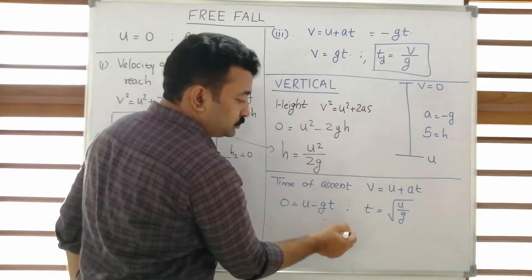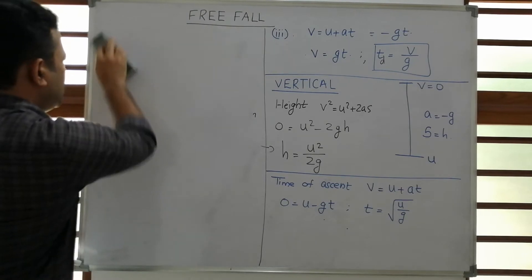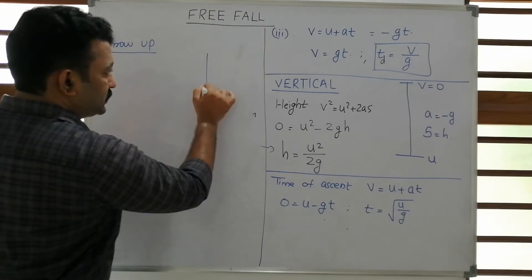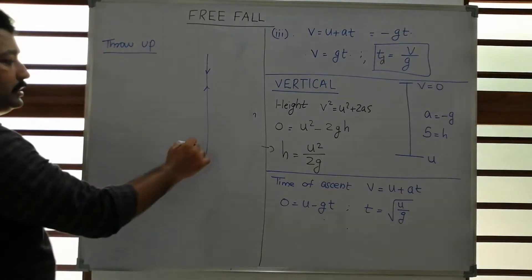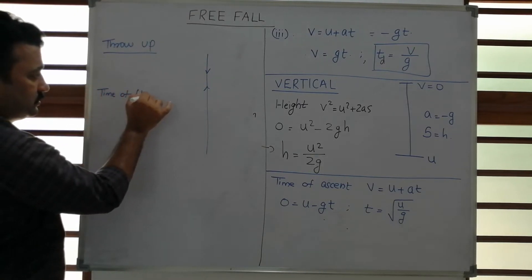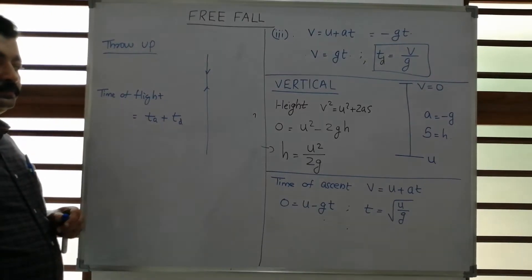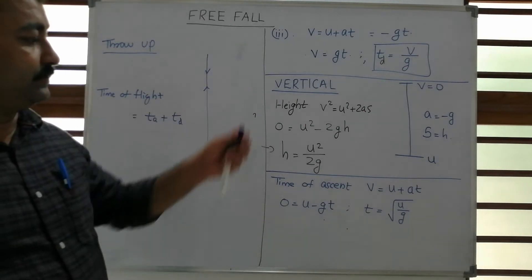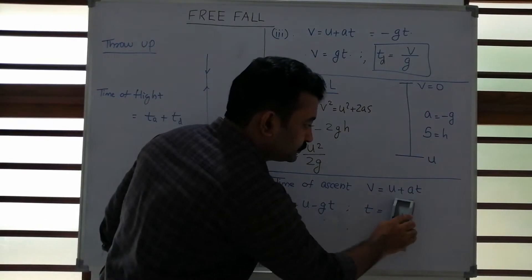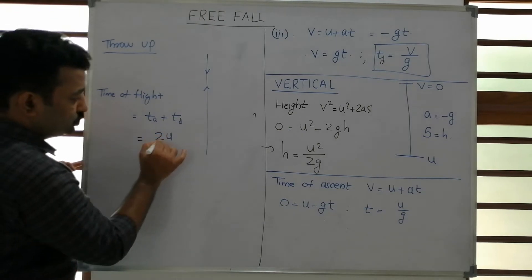Combining these, suppose the particle is thrown up and then falls back down. The total time taken — the time of flight — equals time of ascent plus time of descent, which is u/g plus u/g, giving the time of flight as 2u/g.